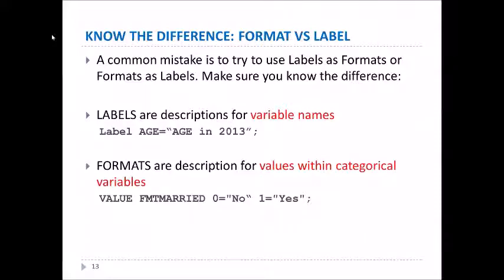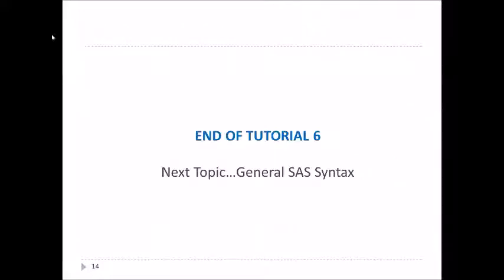You need to know the difference between formats and labels. A common mistake is to use labels as formats or formats as labels. Labels are descriptions for variable names — as shown in this example for 'age'. Formats are descriptions for values within categorical variables — as shown in the FMT_MARRIED format. That's the end of this tutorial; our next topic is going to be general SAS syntax.